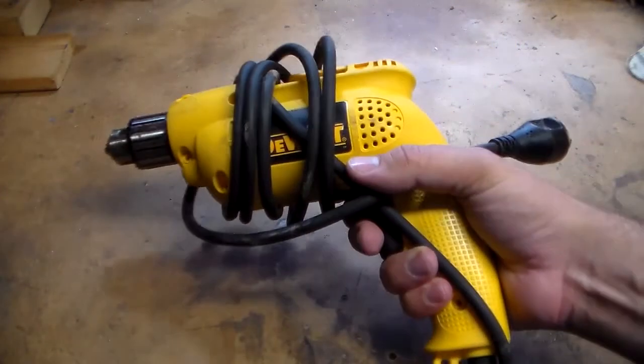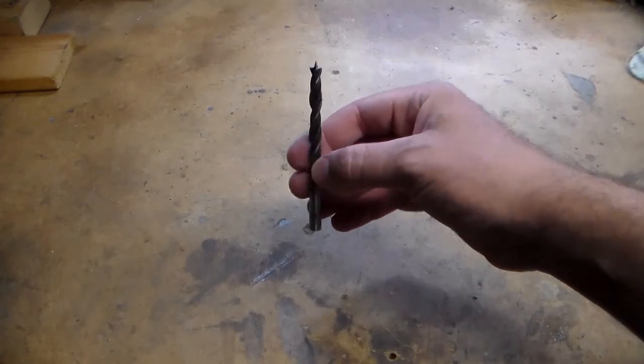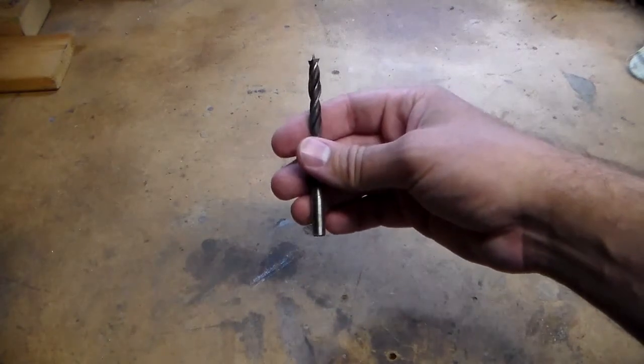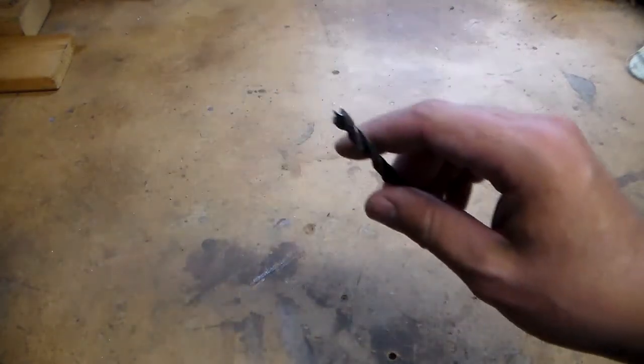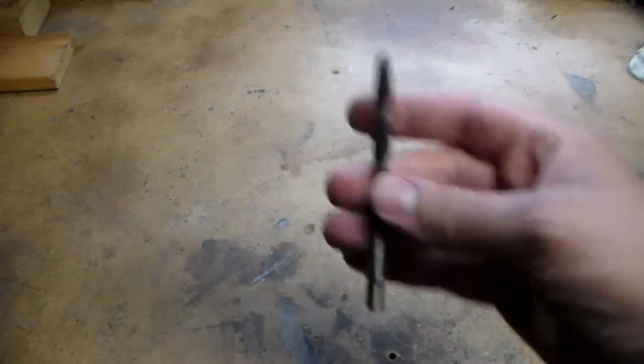The tools you're going to need for this project are a drill or drill press, a 5/16 inch drill bit or anything big enough for the carriage bolt to slide through without undue wobble.